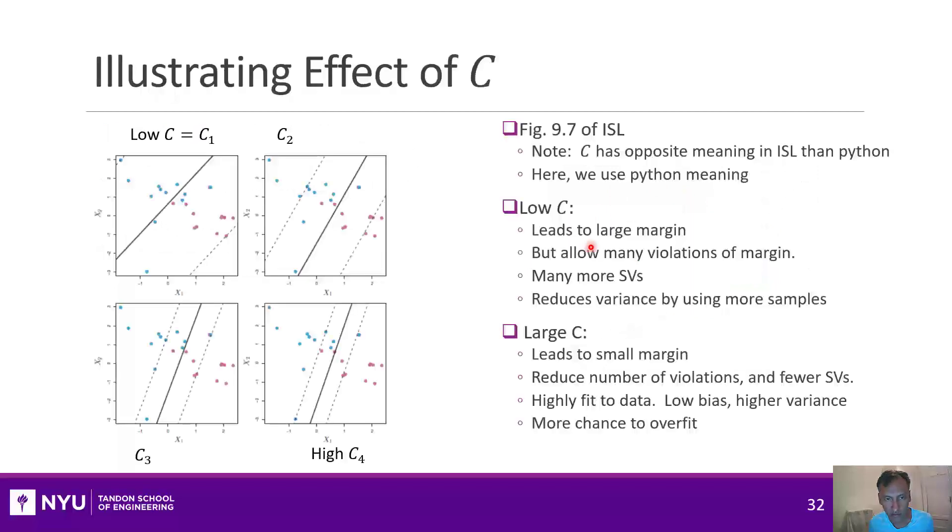With that in mind, we can talk about how to pick that mysterious parameter C. Remember that C trades off the hinge loss term and the margin term. If you pick a high C term, you're trying to penalize the hinge loss. If you pick a low C, you're trying to penalize the margin, or you want to make the margin as big as possible. Before I go on, let me just say that if you're following the text, C has the opposite meaning in the text, but I've kept the C here to be consistent with what SKLearn does.